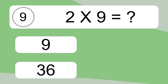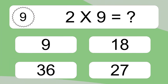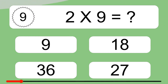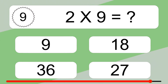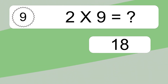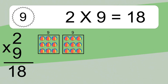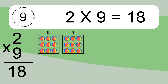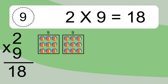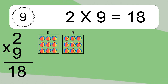2 times 9 equals what? We have 2 boxes, and each box has 9 colorful balls inside. If you count all the balls in all the boxes together, you will have 2 times 9 balls. This equals 18 balls.